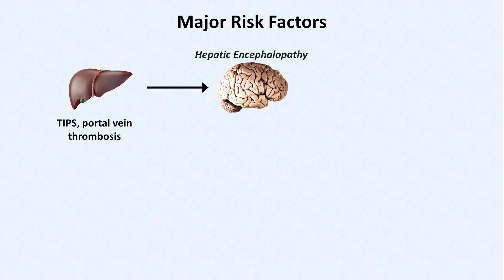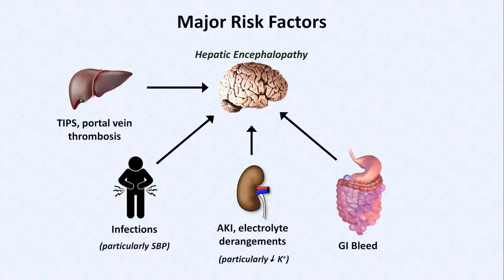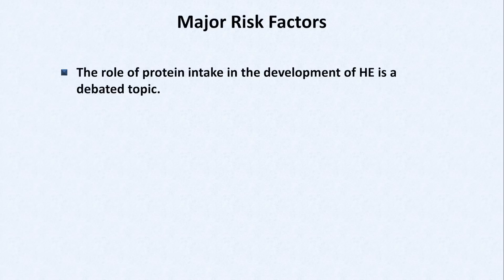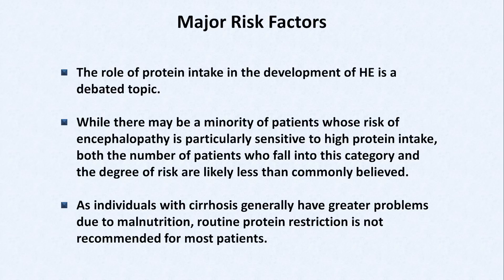Other risk factors include acute infections, particularly spontaneous bacterial peritonitis, acute kidney injury and electrolyte derangements particularly hypokalemia, GI bleeds — in which encephalopathy could be triggered by what amounts to the ingestion of a large protein load as well as from intravascular volume depletion — and both hypoxemia and hypercapnia. The role of protein intake in the development of hepatic encephalopathy is a debated topic. While there may be a minority of patients whose risk is particularly sensitive to high protein intake, both the number of patients in this category and the degree of risk are likely less than commonly believed. As individuals with cirrhosis generally have greater problems due to malnutrition, routine protein restriction is not recommended for most patients.